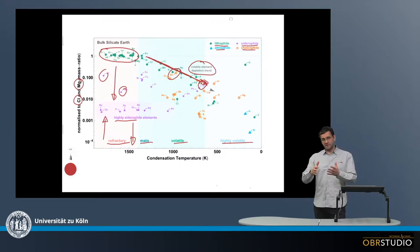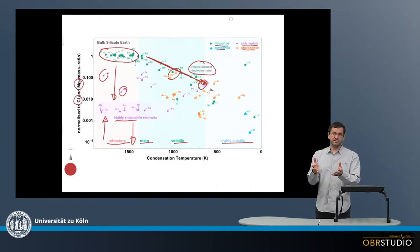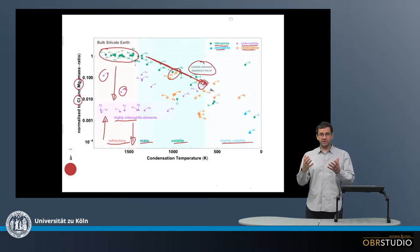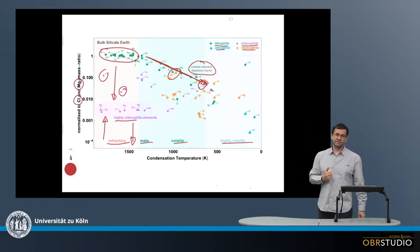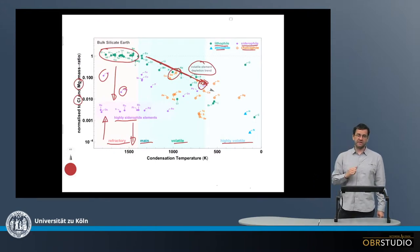This can be interpreted as the material from which Earth accreted formed in a region that was depleted in volatile elements. The reason for this can be that the temperatures in these regions were still rather hot, so that a lot of volatile elements did not condense and are still in the gas phase.